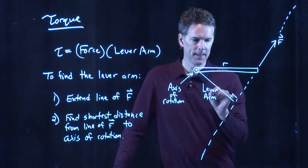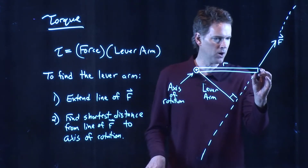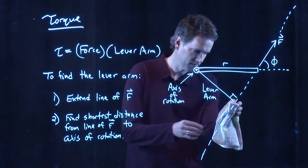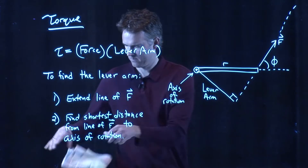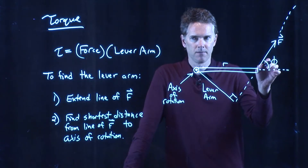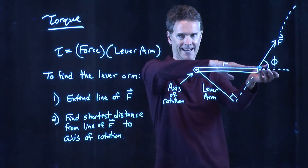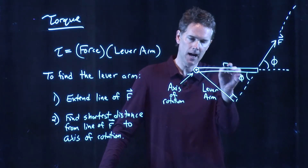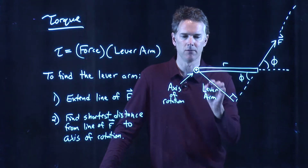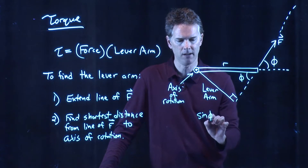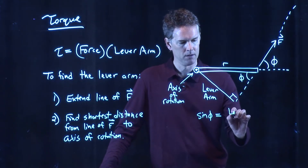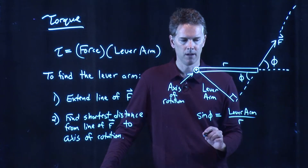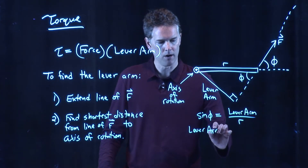So now we just have to identify what that lever arm is. To do that, we can go back to our earlier definition of this angle right here — that was phi. If that is phi, then these two lines that are intersecting mean that this angle is also phi. And now look, I have a right triangle here. I know the hypotenuse of the triangle and I know angle phi, so I can write down what the lever arm is. Because the sine of phi is opposite — which is our lever arm — divided by hypotenuse, which is R. So the lever arm is just R sine phi.